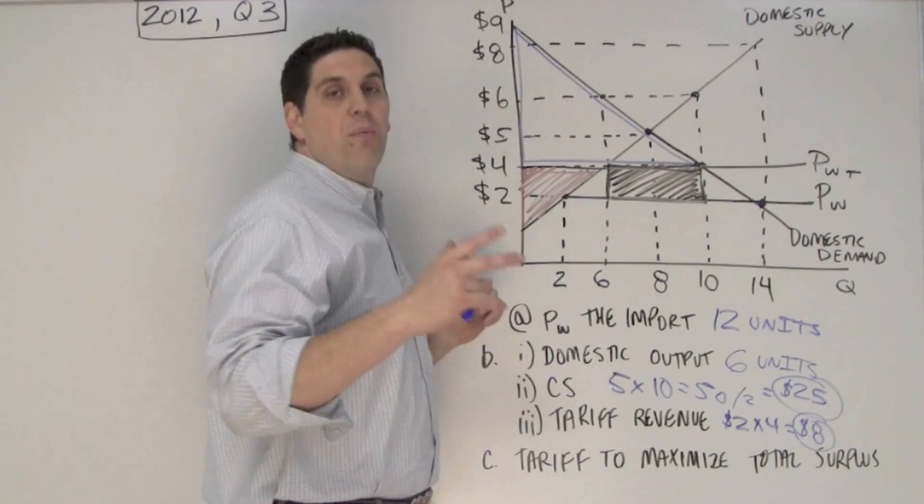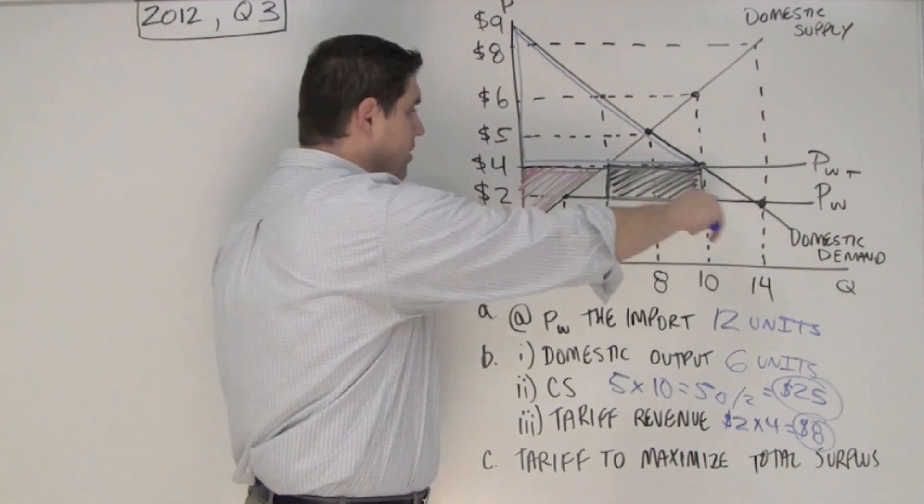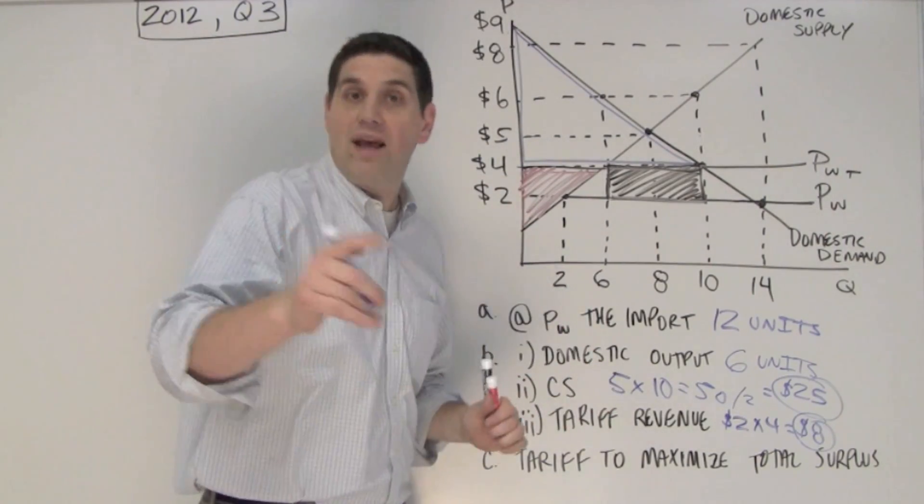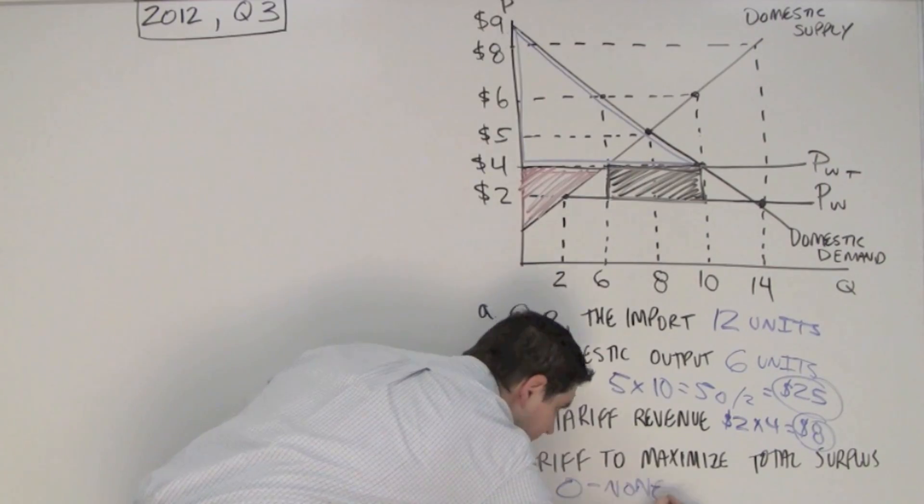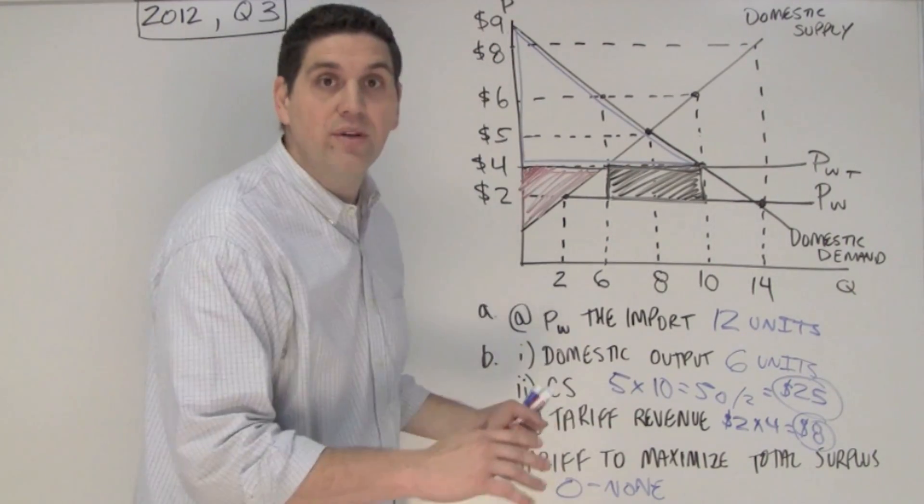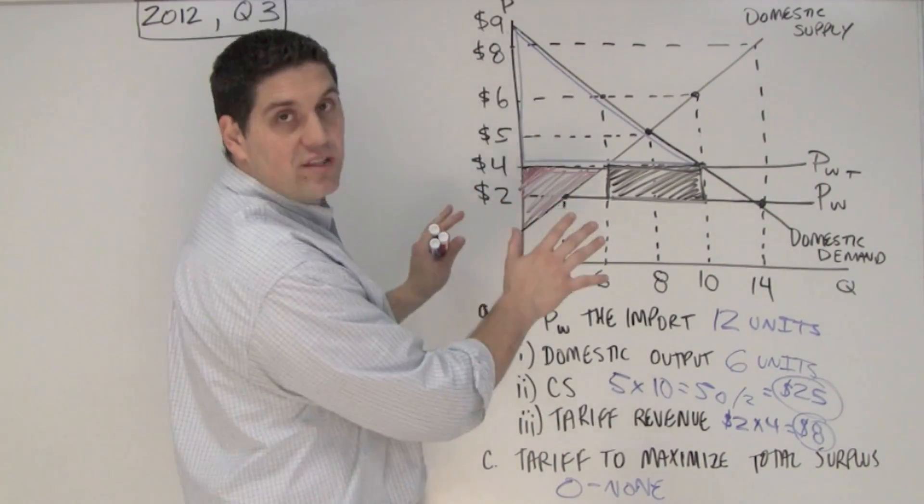Now the last question. So if the price was back to where it was originally at PW, how much did the government put on a tariff that would maximize total surplus? The answer is zero or none. If the goal is to maximize total consumer and producer surplus, the government should put absolutely no tariff on that world price. Make sure you understand why.